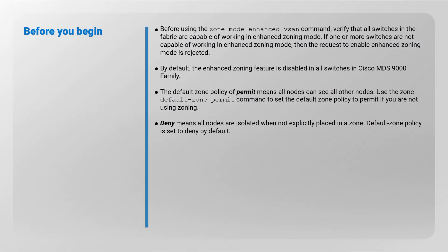Before using the zone mode enhanced VSAN command, verify that all switches in the fabric are capable of working in enhanced zoning mode. If one or more switches are not capable, the request to enable enhanced zoning mode is rejected. By default, the enhanced zoning feature is disabled in all switches in the Cisco MDS 9000 family. The default zone policy of permit means all nodes can see all other nodes. Use the zone default zone permit command to set the default zone policy to permit. If you are not using zoning, deny means all nodes are isolated when not explicitly placed in a zone. Default zone policy is set to deny by default.